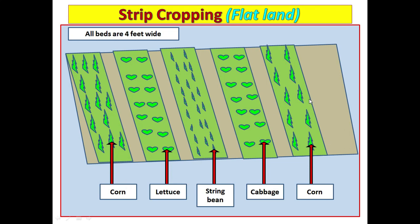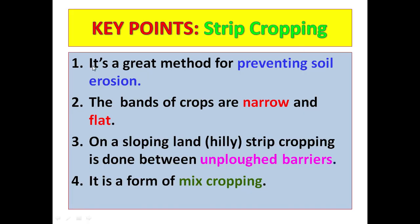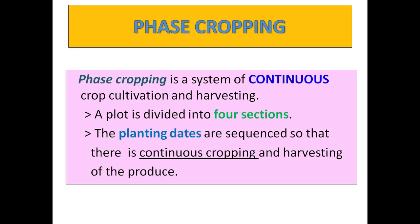Key points of strip cropping: number one, it is a great method for preventing soil erosion, especially on hilllands; number two, the bands of crops are kept narrow and flat to prevent soil erosion; number three, on sloping land strip cropping is done between unplowed permanent barriers; and number four, it is a form of mixed cropping. Barriers prevent the movement of soil particles down the slope.